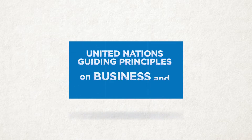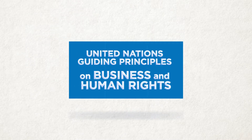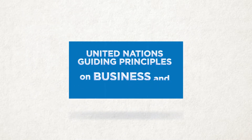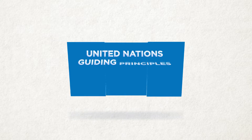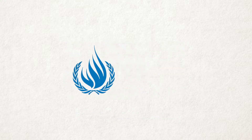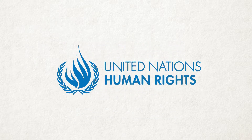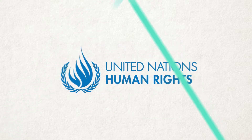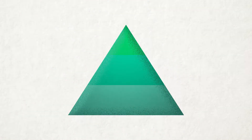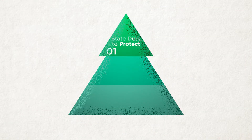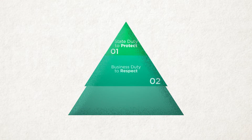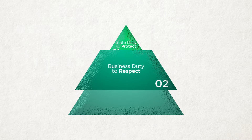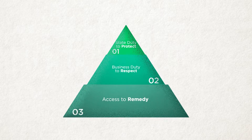United Nations Guiding Principles on Business and Human Rights, 2011. The United Nations Human Rights Council adopted the Guiding Principles on Business and Human Rights to operate on a three-pillar framework: state duty to protect, business duty to respect, and access to remedy.